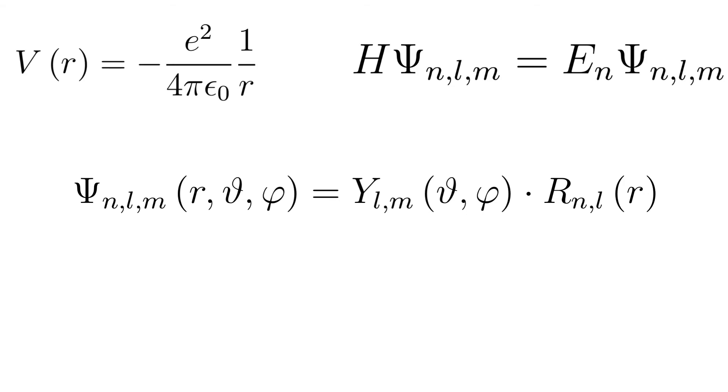You can see that the energy only depends on n but not on l or m. This fact is taken into account by calling n the main quantum number. l and m are called secondary quantum numbers.